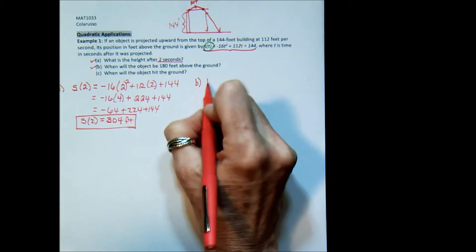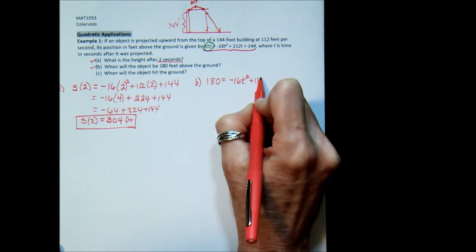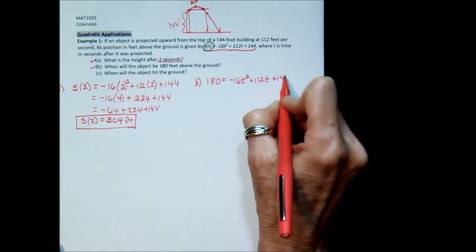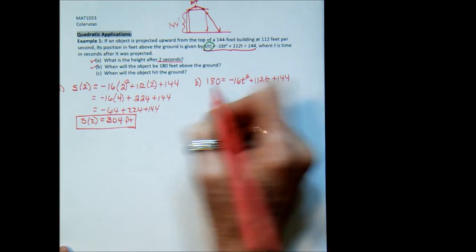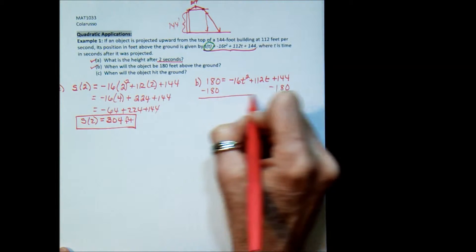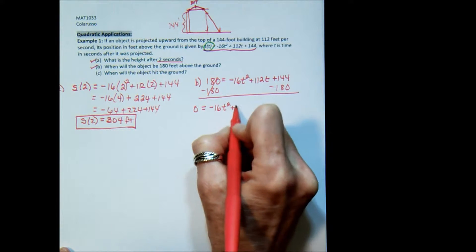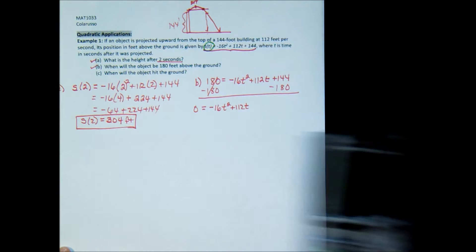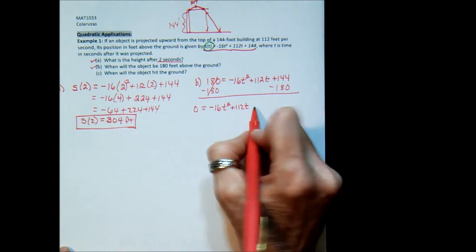So what I do is I write 180 equals negative 16t squared plus 112t plus 144. And how do we solve that? Well, we first need to get it equal to zero. So I'm going to subtract 180 here, and I get zero equals negative 16t squared plus 112t. Now I'm going to get my calculator again. I have a positive 144 minus 180 is a negative 36, so minus 36.